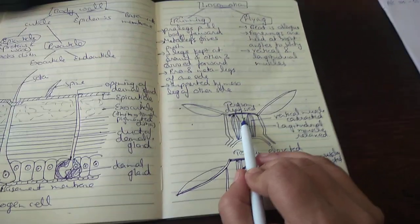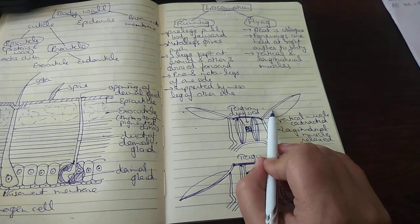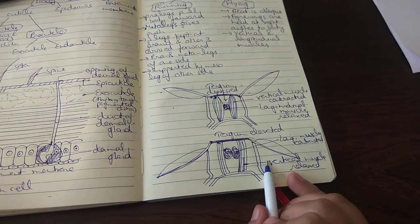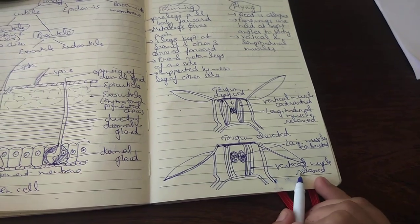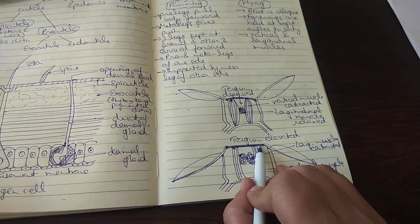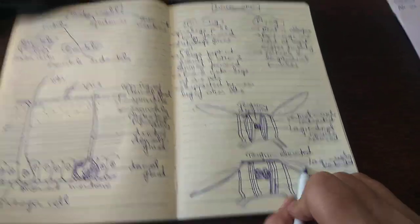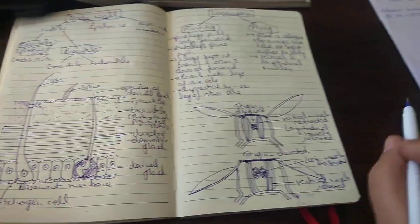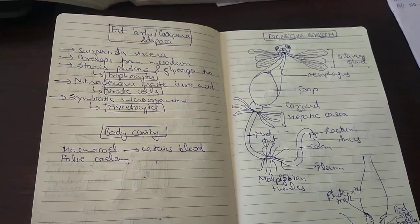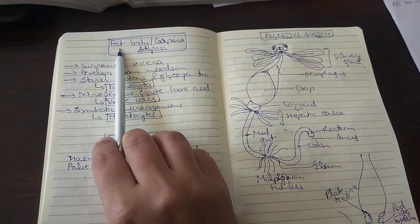As a result, the tergum is depressed and the wings are pushed upwards. When the reverse happens and the vertical muscles relax while the longitudinal muscle contracts, this elevates the tergum and the wings move downward. This flapping brings about the flight movement in cockroaches.